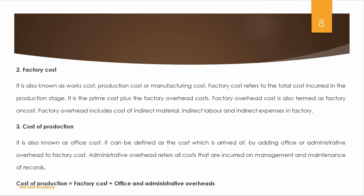Next is Cost of Production, also known as office cost. It is arrived at by adding office or administrative overhead to factory cost. Administration overhead refers to all costs incurred on management and maintenance of records. Cost of Production equals Factory Cost plus Office and Administrative Overheads.